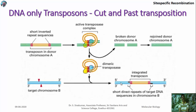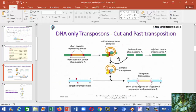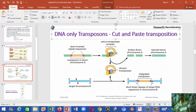The mechanism of DNA-only transposons follows a cut-and-paste mechanism. The transposon region contains particular end sequences. These end sequences can be folded, a nick is created, and the transposon is removed from one particular point. The removed DNA can then be inserted into another region with a particular specific target sequence.